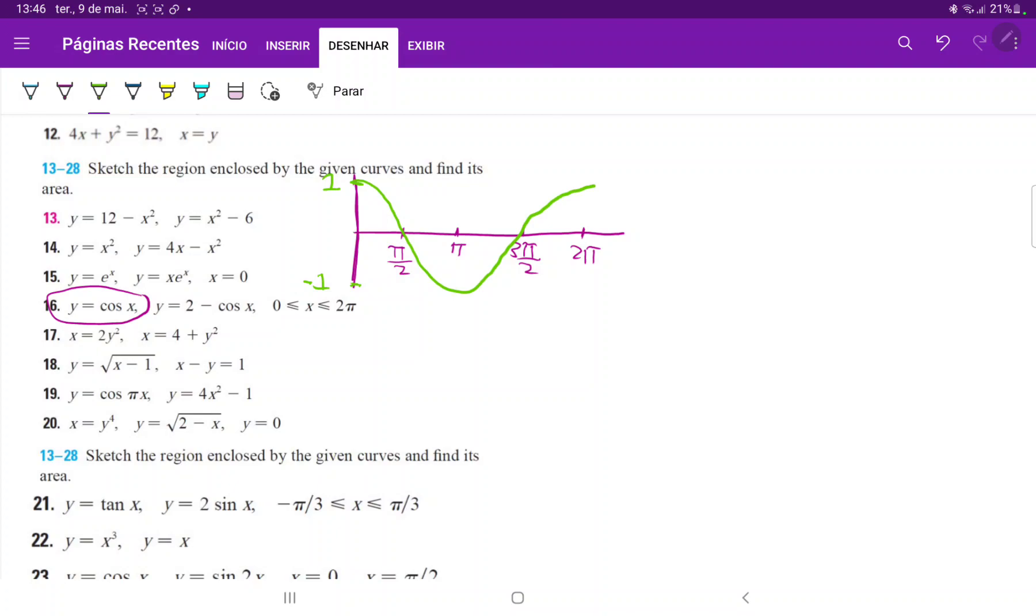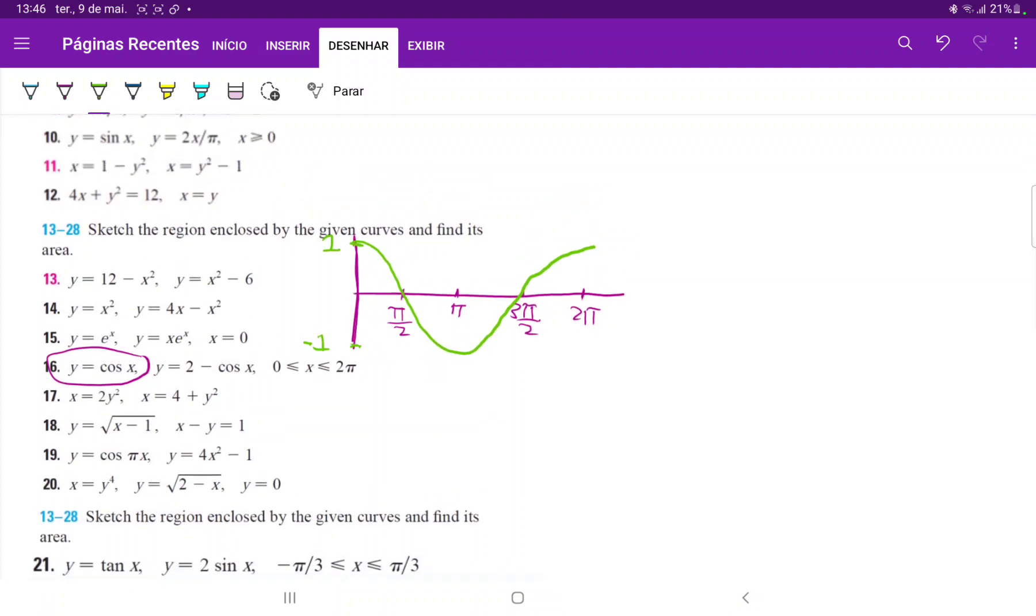And now we have to draw 2 minus cosine of x. So it's a cosine function that has been flipped upside down, has been reflected across the x-axis, and also has been shifted up by 2. What this means is that, maybe I will extend the axis over here.